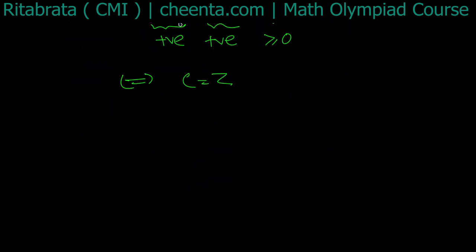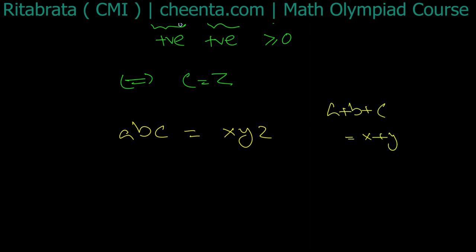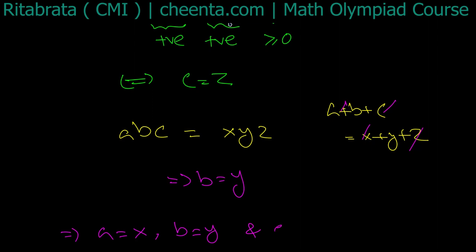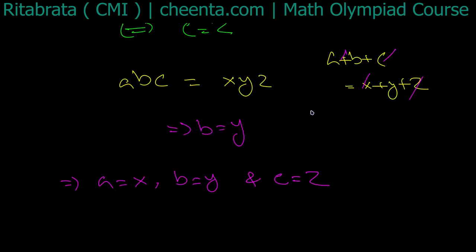Now we already have abc = xyz and a + b + c = x + y + z. With a = x and c = z established, it easily follows that b = y. So a = x, b = y, and c = z — and we are done.